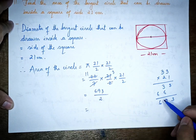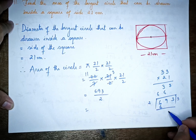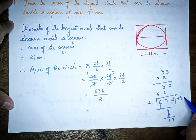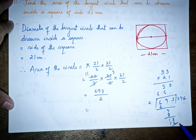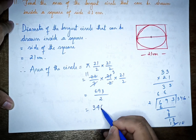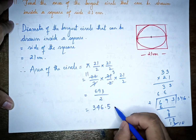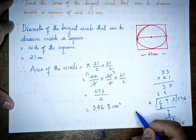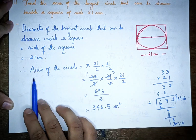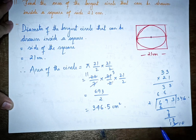693 divided by 2 gives 346.5. So the area of the largest circle that can be drawn inside a square of 21cm is 346.5 centimeter square.